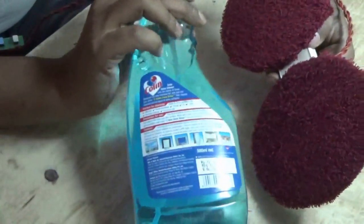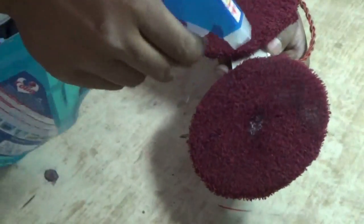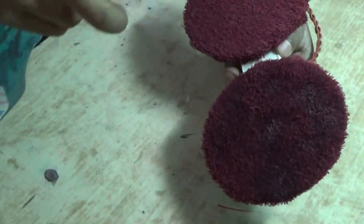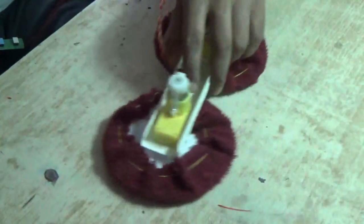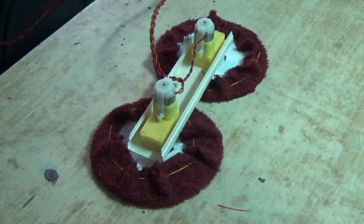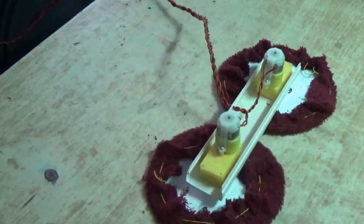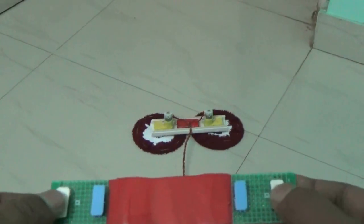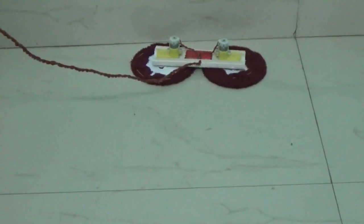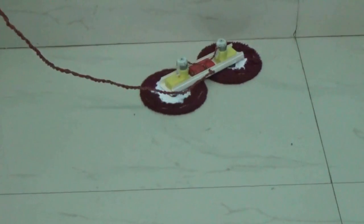Spray some cleaning agent on the towel cloth. Toggle between white switches to have a forward movement. Press blue switch to take turn.